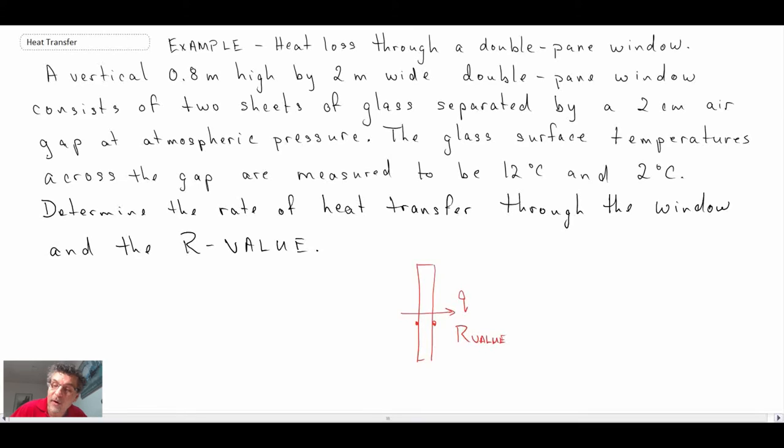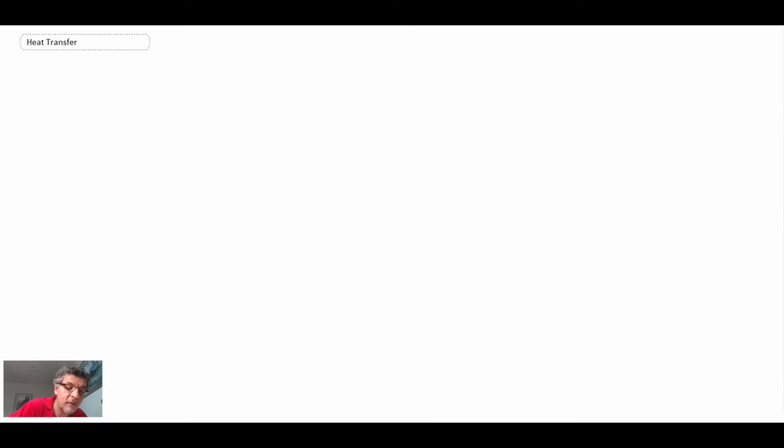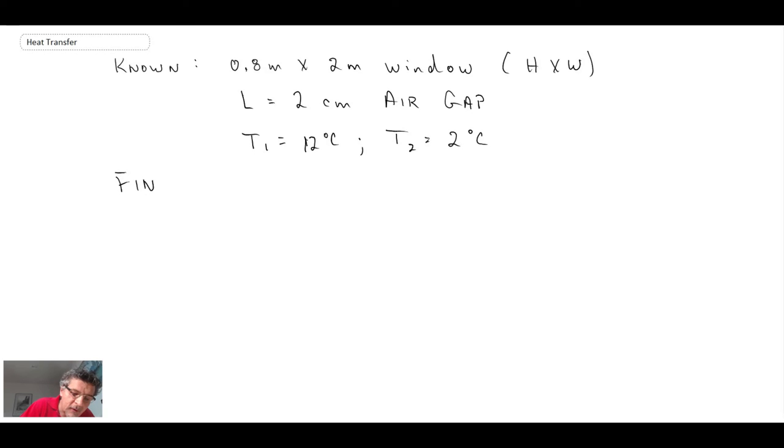So let's begin this problem by writing out what we know. So that is what is known, and then what we're looking for, we want to find the heat transfer through the window. And we're also looking for the R value.